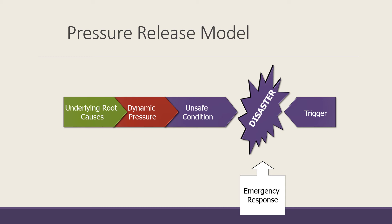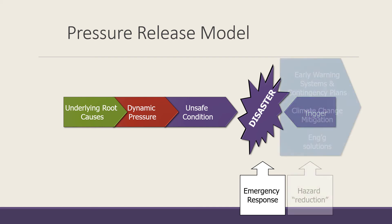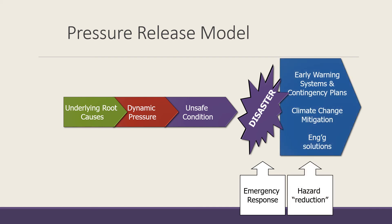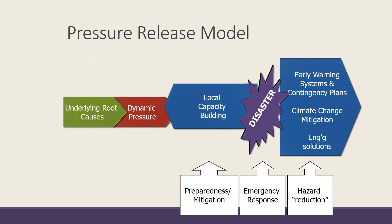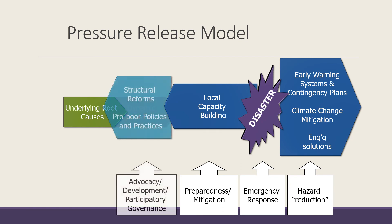So in the pressure release model, during a disaster we do emergency response. For the trigger, we do hazard reduction or mitigation — provide early warning systems and contingency plans, climate change mitigation, and engineering solutions. For the unsafe conditions, we conduct local capacity building for preparedness and disaster mitigation. For dynamic pressures, we do structural reforms and promote pro-poor policies and practices, which requires advocacy, development, and genuine participatory governance.